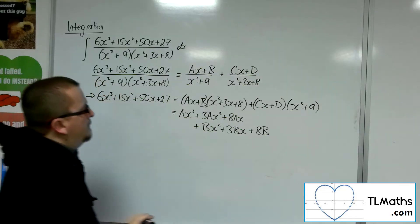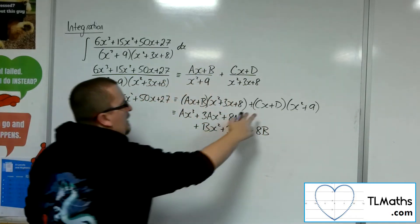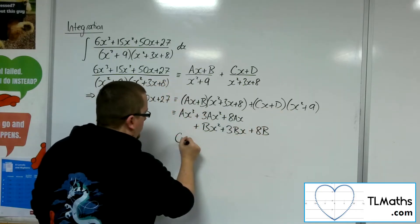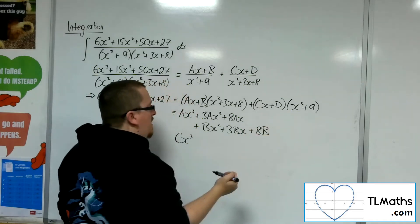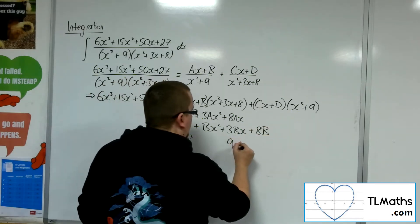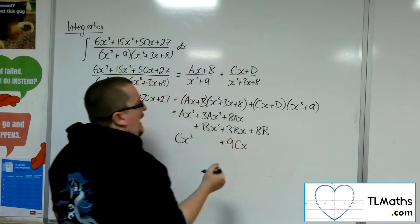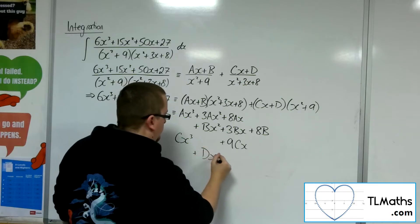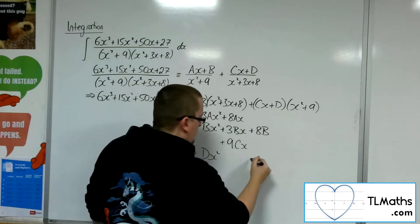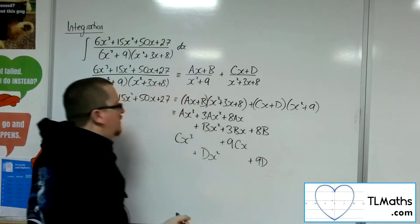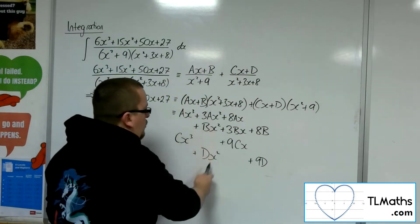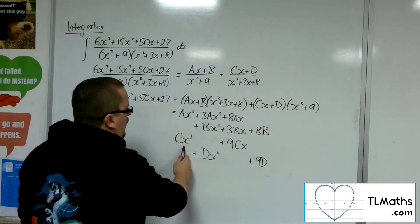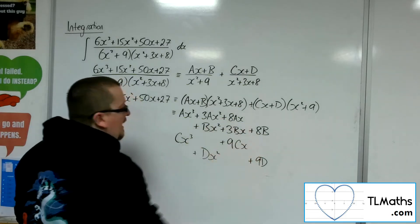Now multiplying out these. I'm going to have cx times x squared. So that's cx cubed. I'm going to get cx times 9. So 9cx. Multiplying out through the d. So dx squared and I've got 9d. Now what I've conveniently done here is split it up into columns so I can see precisely what I've got for x cubes, what for x squareds, x's and constant terms.